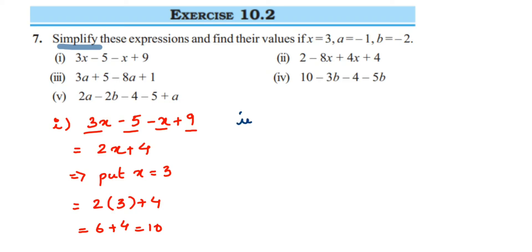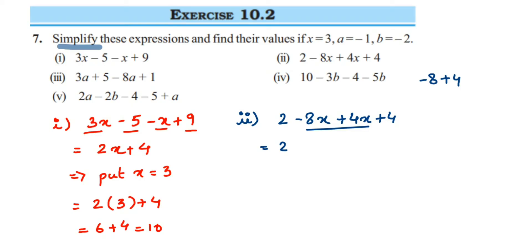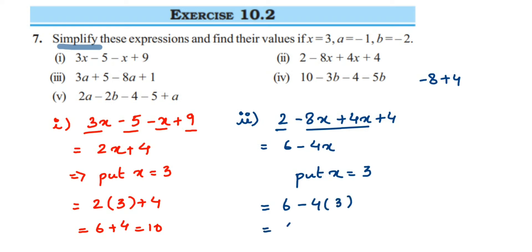The second question: simplify minus 2 minus 8x plus 4x plus 4. The like terms are minus 8x and plus 4x. Since they have opposite signs, minus 8 plus 4 gives minus 4, so we get minus 4x. The constants 2 plus 4 give 6, so the simplified expression is 6 minus 4x. Substituting x=3: 6 minus 4 into 3 is 6 minus 12. Since 12 is greater and negative, the answer is minus 6.